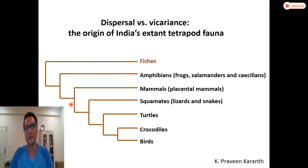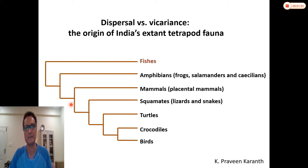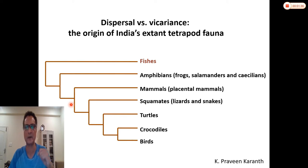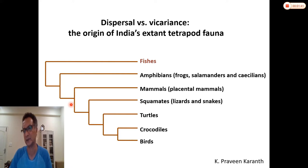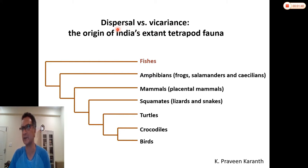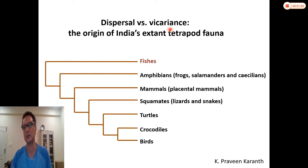The question is: when it comes to tetrapod diversity in India, where did they come from? When did they arrive in India? What is the origin of India's tetrapod fauna? That is the question we'll try to address today. We will look at two processes in biogeography — dispersal and vicariance — to understand the current distribution of tetrapods in India.